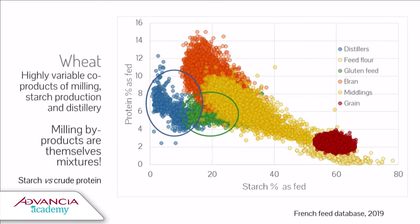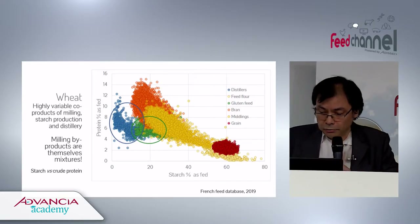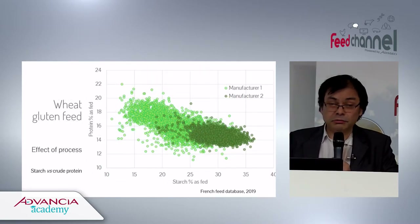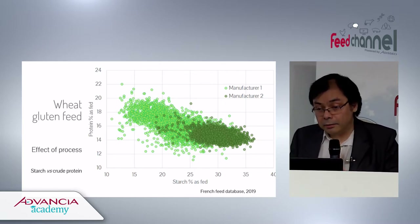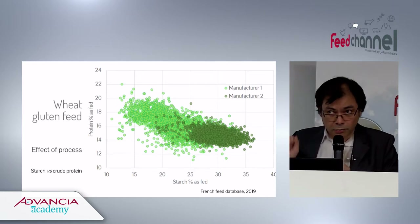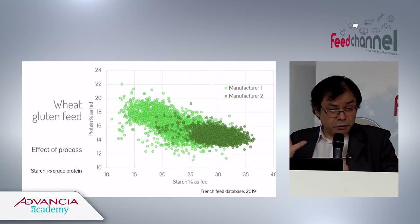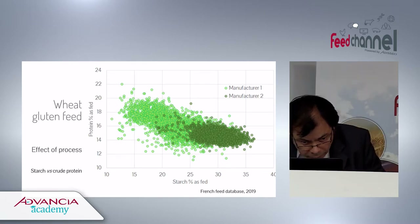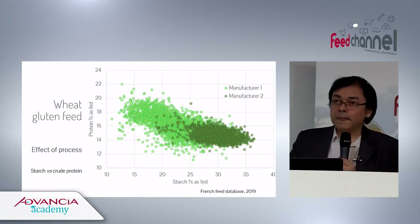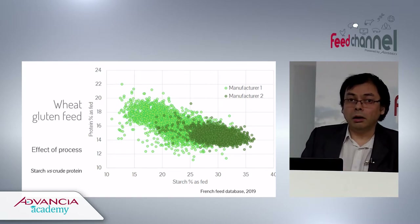The yellow dots are milling by-products, green dots are starch by-products, and blue dots are distillery by-products. Looking at wheat gluten feed — by-product of the starch industry — it is actually a series of products from two manufacturers, both producing wheat starch but using different processes, resulting in products with different starch levels (about 30% vs. 20%) and significant differences in protein content.